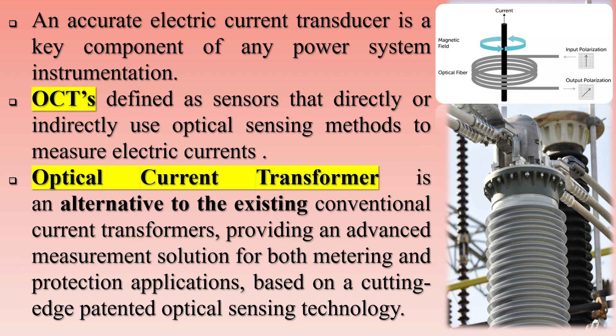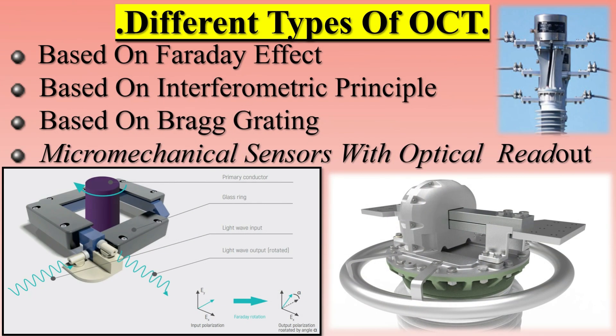OCTs are used in various applications where electrical isolation is required or where it is difficult or impossible to use a conventional current transformer. They can measure current in high-voltage applications, such as power transmission lines, where conventional current transformers would be impractical or dangerous to use. OCTs can also be used in sensitive electronic applications, such as data centers, where electrical noise can interfere with sensitive equipment.